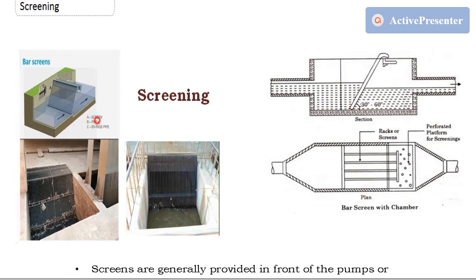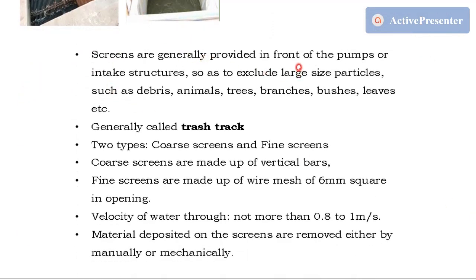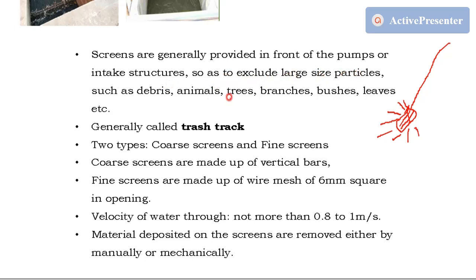Now, what is exactly the definition of screening? Screens are generally provided in front of pumps — that is called a foot valve. This pipe will be there, and in front of that pipe you will have a screen. In big projects, we use these screens to exclude large-size particles such as debris, animals, trees, branches, bushes, leaves, etc. Generally, they are called trash racks.